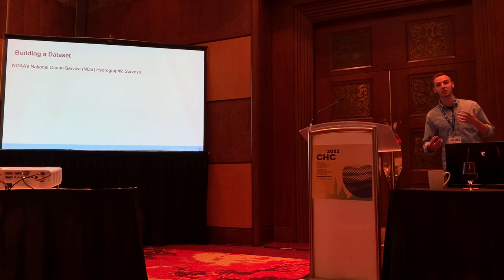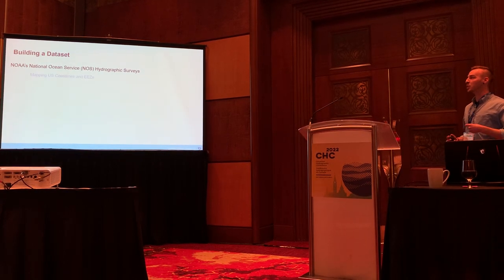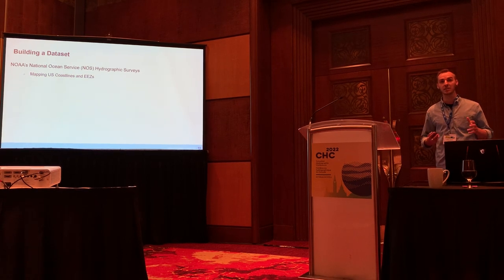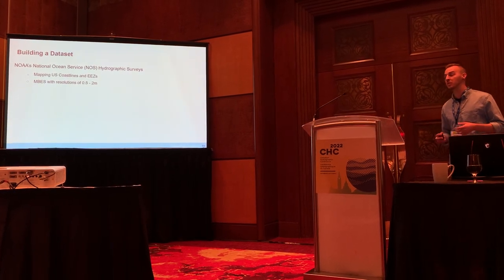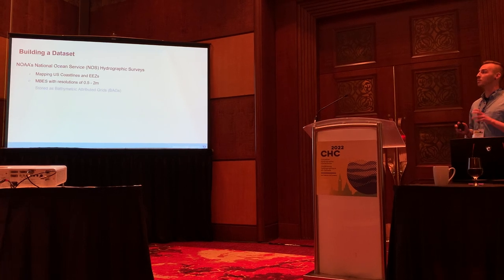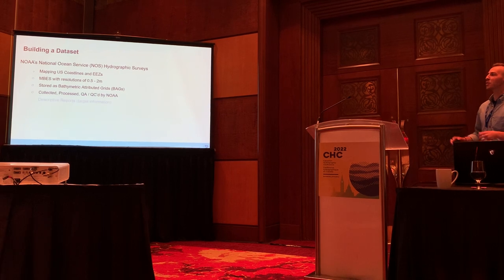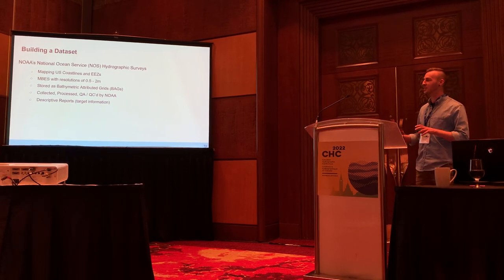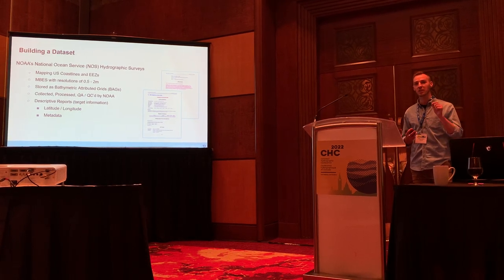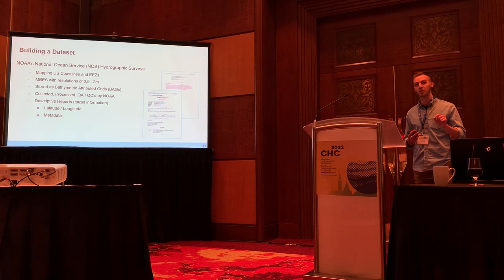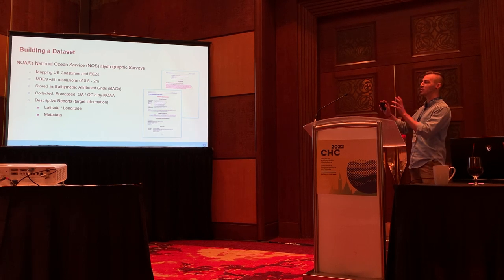After spending time looking at different data sources, I ultimately settled on NOAA's NOS Hydrographic Survey data, which is used for mapping coastlines and EEZs. From this data source, we're pulling bathymetry data with spatial resolutions as low as 0.5 meters to about 2 meters, most of which are stored inside bathymetry-accumulated grids or BAG files. The real reason we settled on this particular dataset is that for each survey, there's a descriptive report containing detailed information on each object identified by trained hydrographers and useful metadata that could serve as the basis for creating labels.